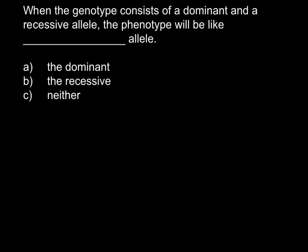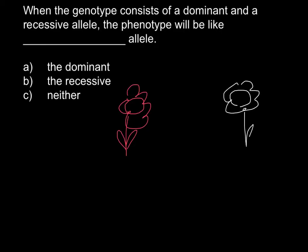And if you cannot do it right away, here is my explanation. Imagine that we have one plant with red flowers and another plant with white flowers. A plant with red flowers would be dominant for this color, and this would be capital R. And a plant with white flowers would be recessive, and we put double W here.